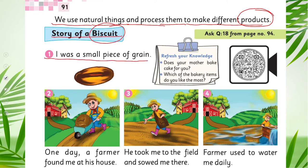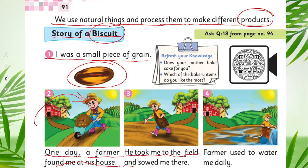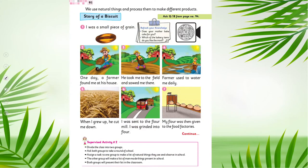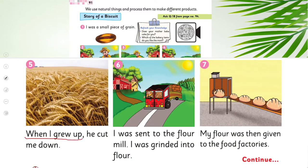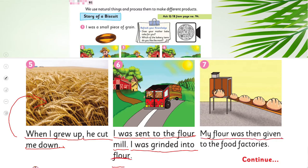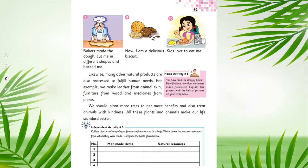"I was a small piece of grain. One day a farmer found me at his house." This is the farmer — he took me to the field and sowed me there. He put the grain inside the land and used to water me daily. When I grew up, he cut me down. When the crops were grown, he cut all the crops. I was sent to the flour mill and was grinded into flour.